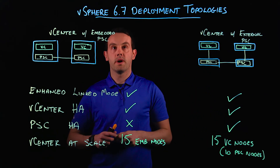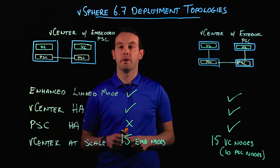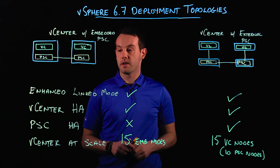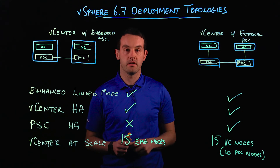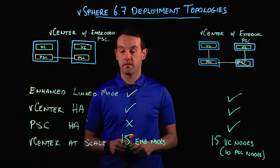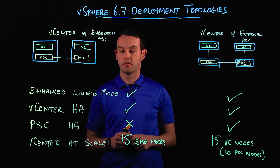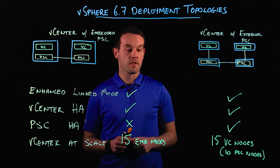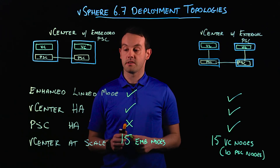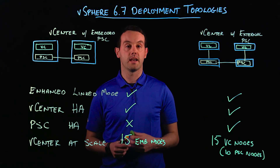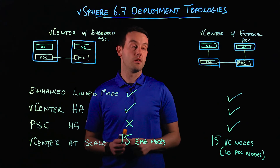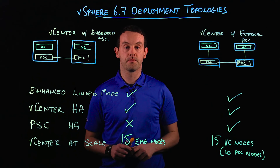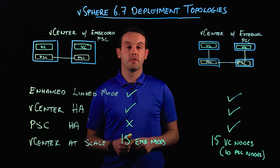To summarize, the two deployment topologies — vCenter with an embedded PSC and vCenter with an external PSC — both provide Enhanced Link Mode for a single pane of view for up to 15 vCenter nodes in the SSO domain. Both deployment topologies support vCenter HA, but if you're using an external PSC with vCenter HA, you're only protecting half the stack, which is why PSC HA is also available to protect the PSC layer. Thank you and I hope you've enjoyed this video.